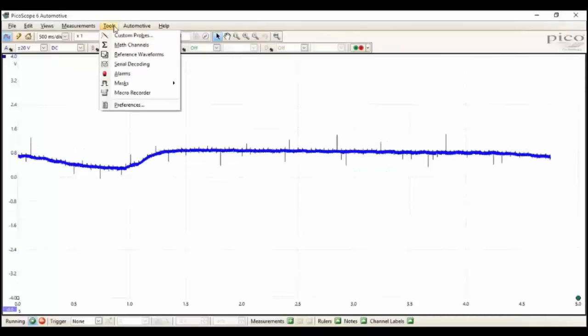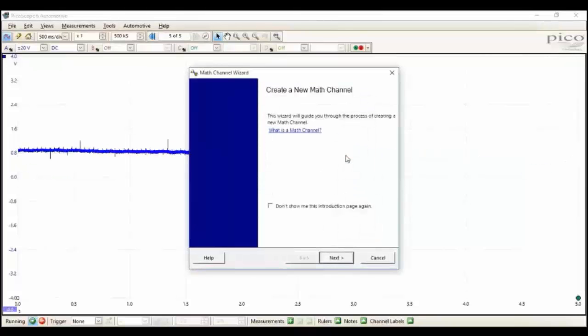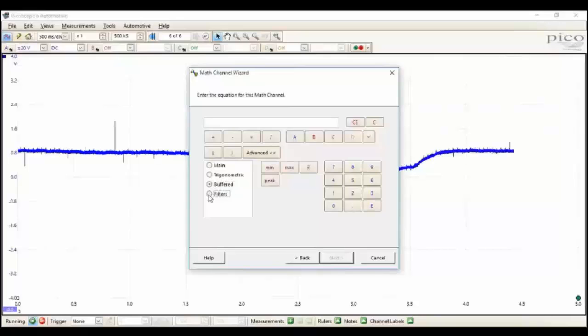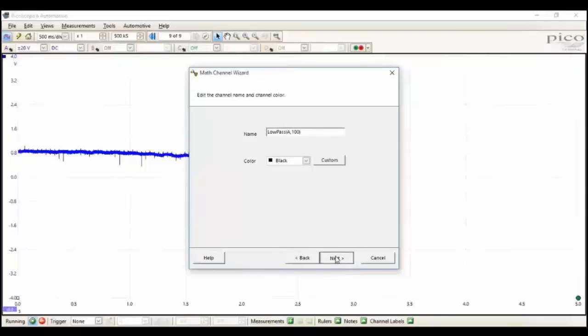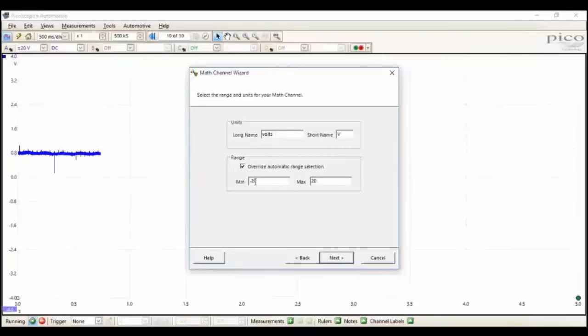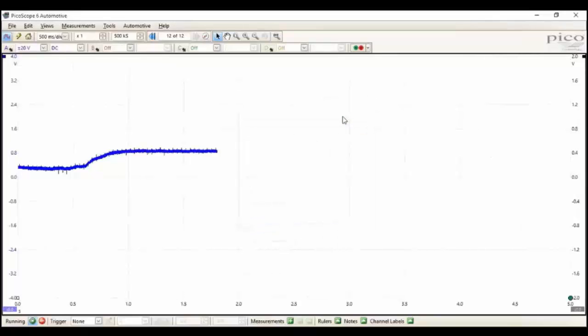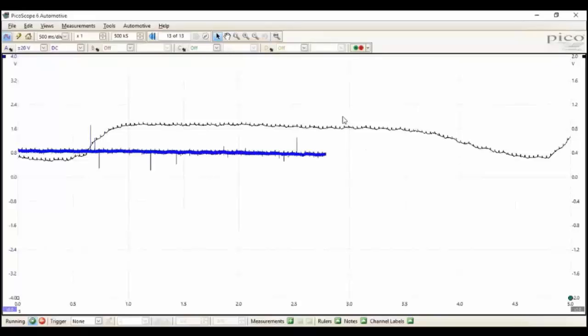So our alternative option for filtering is math channels, tools, math channels, and then create. Click next, then click on advanced, and it's filters that we want. And low-pass. And it's channel A, of course, because we are only measuring on channel A. So it's channel A, comma, 100. So that's a low-pass 100 hertz filter on channel A. We want to override the voltage ranges, so we'll go to minus 2 volts and plus 2 volts. That will give us great resolution. Tick the box adjacent to your low-pass A100 math channel, and there you have it. It will appear on screen at the end of the waveform buffer.